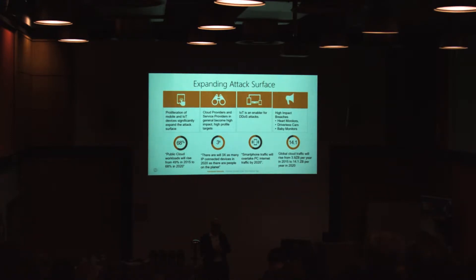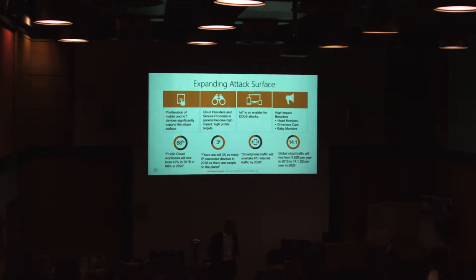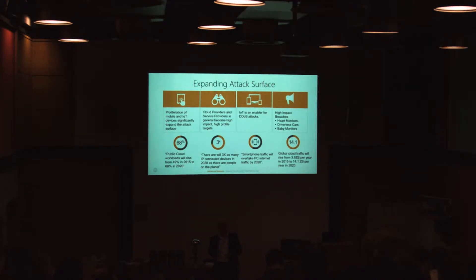Looking at the types of exploits that happen: IoT in particular is used to create something called a botnet — lots of connected devices around the world, potentially billions of them, that are infected and used to attack other systems without you even knowing it. If you think about what some of these devices are — heart rate monitors, driverless cars — and you breach them, what are the potential consequences? We've already seen breaches with baby monitors.